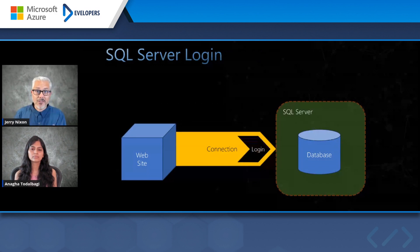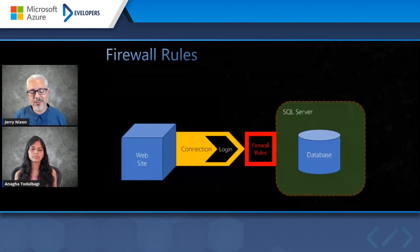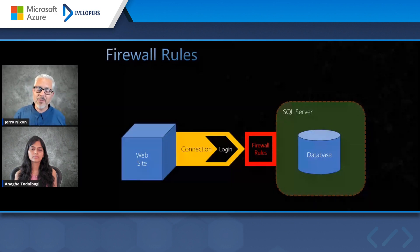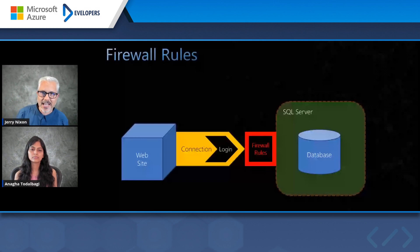One thing worth pointing out is that in SQL Server, before you even get to SQL Server, there are a set of rules that say who can connect to it. This is particularly interesting when you have something running in the cloud. For example, in Azure, you might have a rule that says only services inside Azure can interact with the database. So your website, which is not in Azure, tries to interact with that database and fails — because there's a firewall rule that doesn't allow it to access.